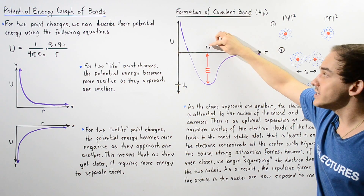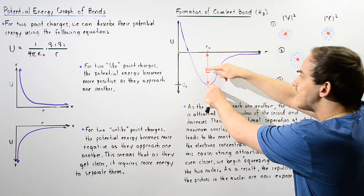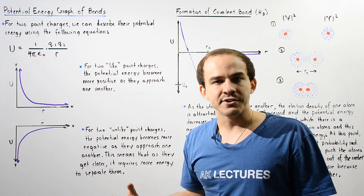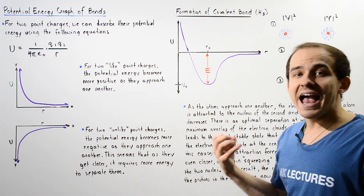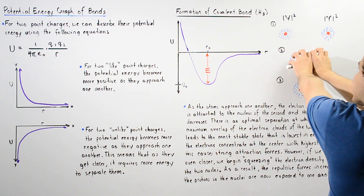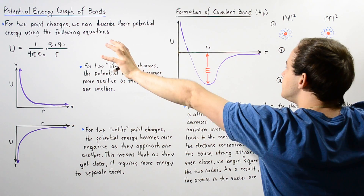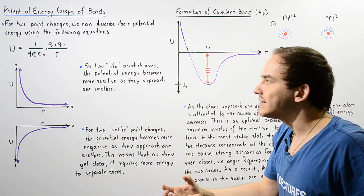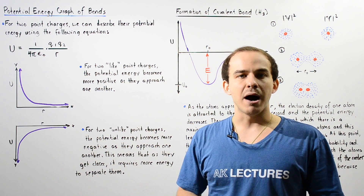At this particular point, when the radius is given by R-naught, this change in energy is known as the binding energy. This binding energy represents the energy that needs to be inputted into our molecule to actually separate our two atoms to an infinite distance away. This is known as the bond dissociation energy, or the binding energy, of our molecule.